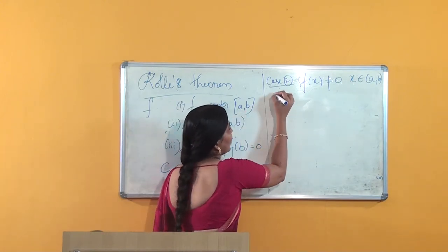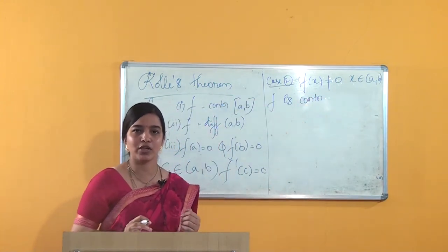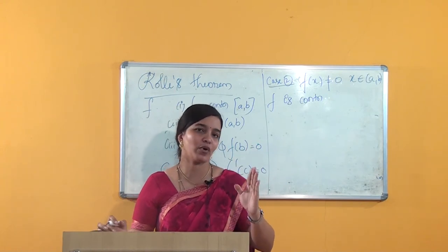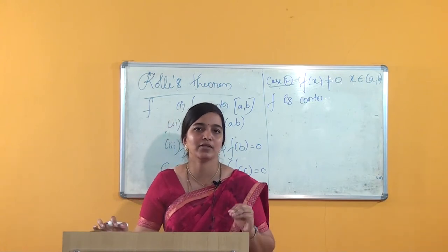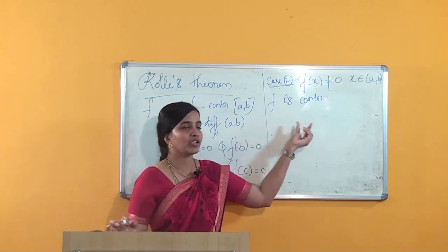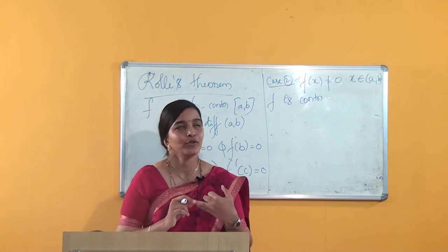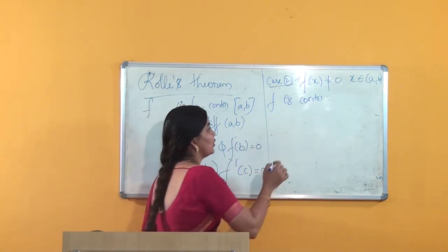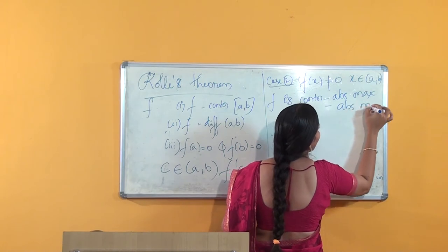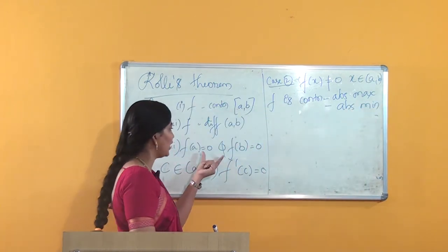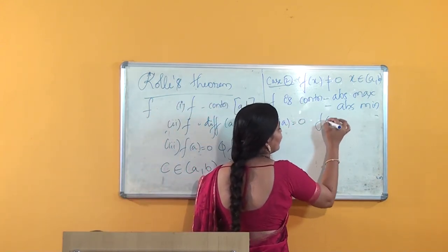Given that f is continuous — the first condition is that f is continuous on the closed interval [a, b]. I have already mentioned one theorem, which is the extreme value theorem. This theorem states that if a function is continuous, it will have an absolute maximum value as well as an absolute minimum value. So clearly, since this function is continuous, it will have both an absolute maximum and an absolute minimum value.